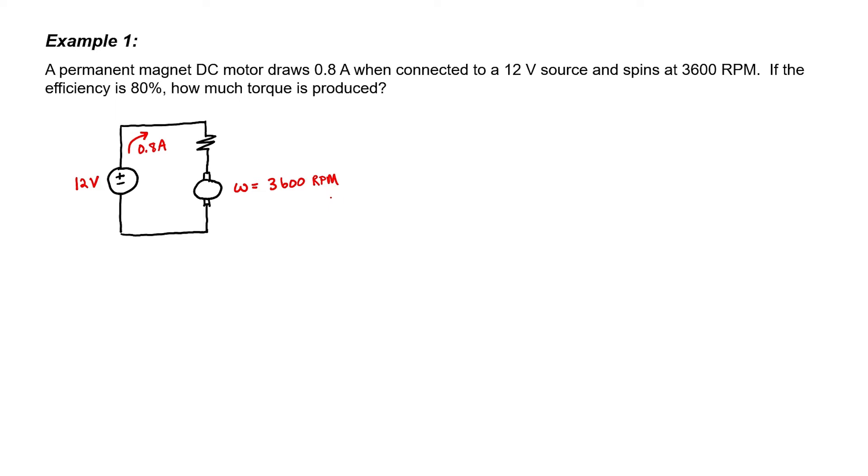Let's go ahead and first convert RPMs to SI units. I can rewrite RPMs as rotations per minute. There are 2 pi radians in one rotation and 60 seconds in one minute. I now have the rotational speed in SI units, 120 pi radians per second. Since I know both the current and voltage at the source, I know the electrical power input to the system is 9.6 watts.